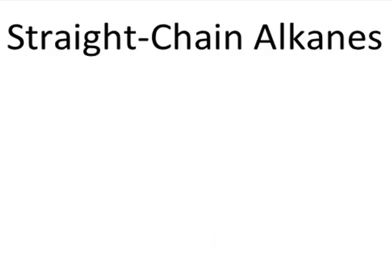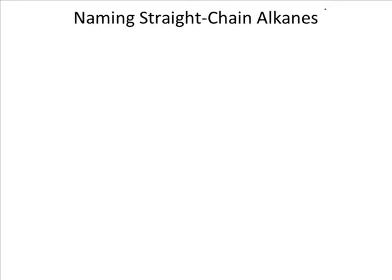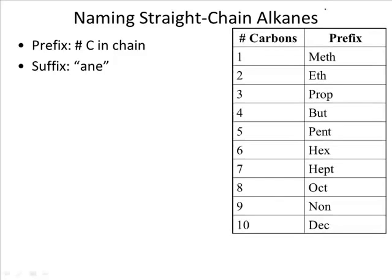Naming straight chain alkanes is very easy because each name simply consists of two parts: a prefix and a suffix. The prefix indicates the number of carbons in the chain. The suffix, because we're dealing with the functional group alkanes, is the letters A-N-E, pronounced 'ane,' just like in the word alkane. The only tricky thing about naming straight chain alkanes is that it's the first time we're going to see the prefixes that are common throughout organic chemistry. We'll learn the first ten prefixes, which can be used for naming alkanes as well as all of the other molecules we'll be working with this quarter.